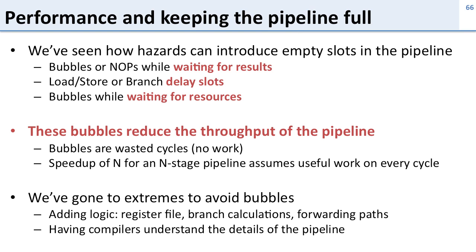We changed the register file, moved the branch calculations around, added forwarding paths and forwarding logic, and had the compiler understand the details of the pipeline. The compiler needs to be able to put instructions in the load, store, and branch delay slots. So we've gone through a lot of work to try and get rid of these bubbles.